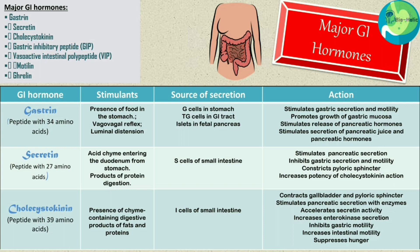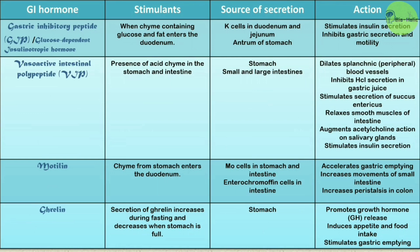Secretin stimulates pancreatic secretion, inhibits gastric secretion and motility, constricts the pyloric sphincter, and increases the potency of cholecystokinin action. Thirdly, cholecystokinin is a peptide with 39 amino acids. Presence of chyme containing digestive products of fats and proteins stimulates cholecystokinin secretion. The source of cholecystokinin is the I cells of the small intestine. It contracts the gallbladder and pyloric sphincter, stimulates pancreatic secretion with enzymes, and accelerates secretin activity.